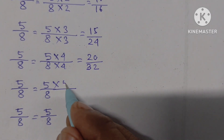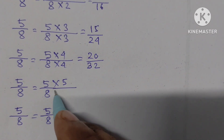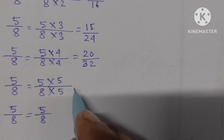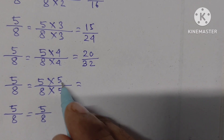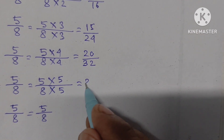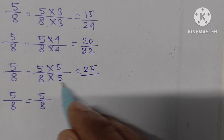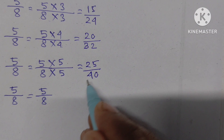Next, we have to multiply by 5 — both numerator and denominator. 5 times 5 is 25, 5 times 8 is 40. So the equivalent fraction is 25 by 40.